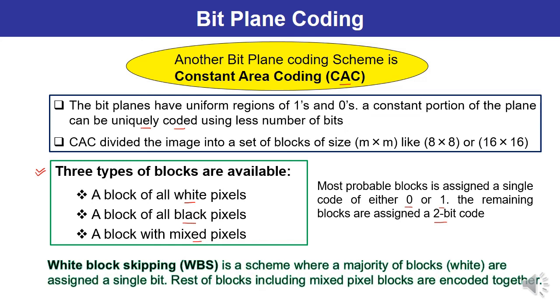White block skipping (WBS) is a scheme where a majority of blocks that are white are assigned a single bit, and rest of the blocks including mixed pixel blocks are encoded together. In the case of white block skipping, blocks which are white are assigned a single bit, and all the remaining blocks including black and mixed pixels are assigned with other codes.